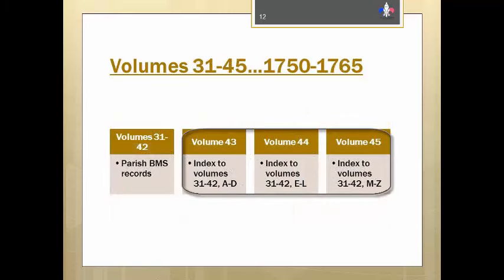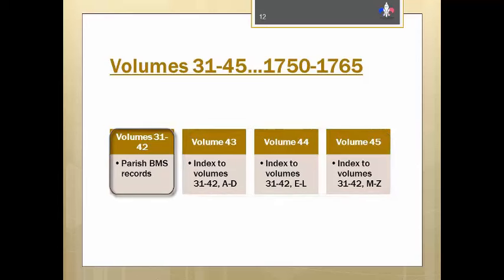In the 1750–1765 grouping, the last three volumes are used for the general index to the baptisms, marriages, and burials found in volumes 31 to 42. Sick lists for Quebec are in Volume 31. Records from the Mission of the Hurons of Jeune-Lorette are in Volume 33, and Montreal sick lists are in Volume 37.